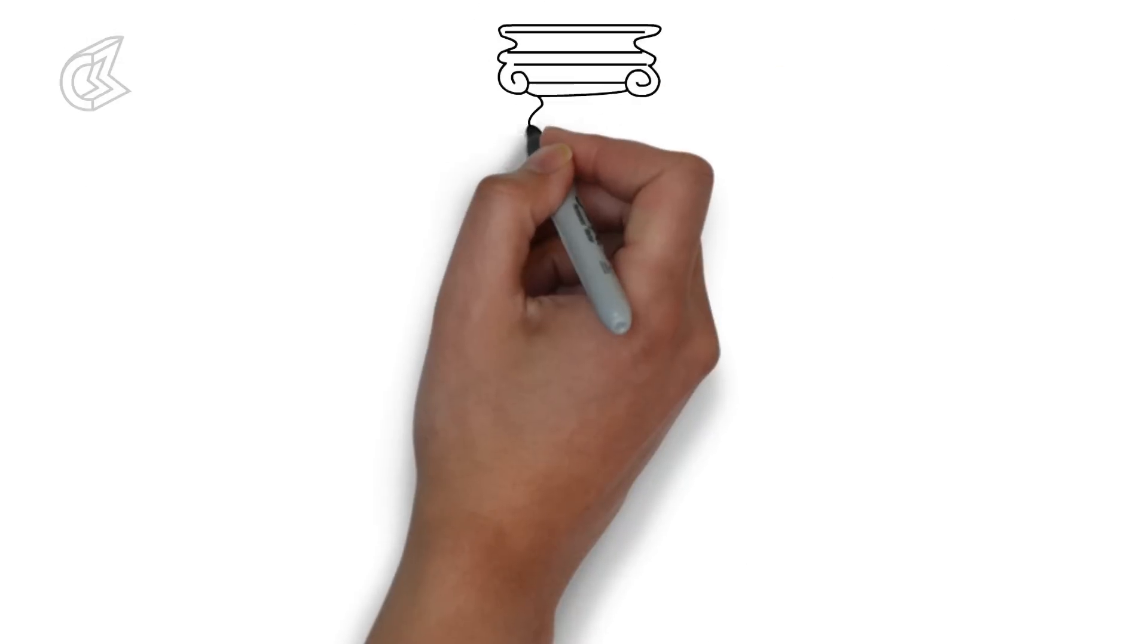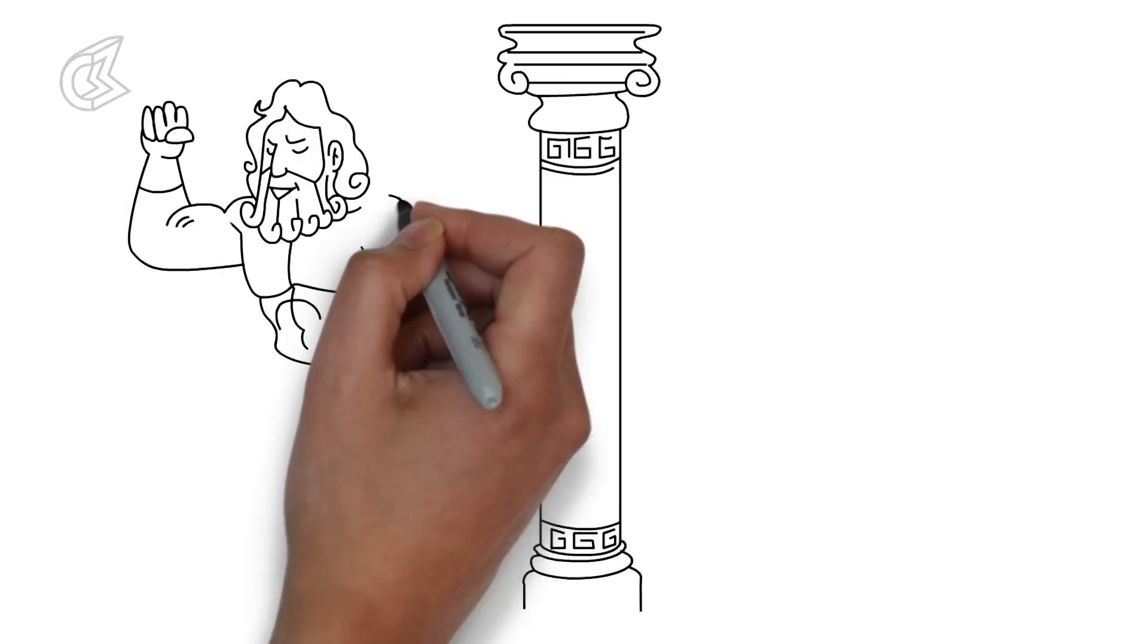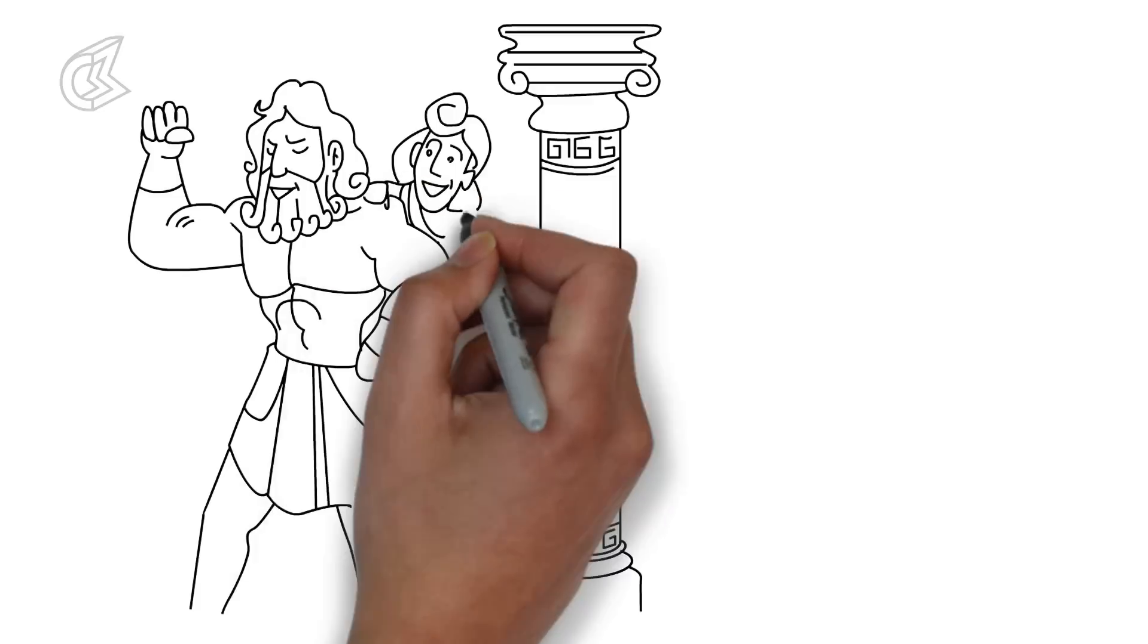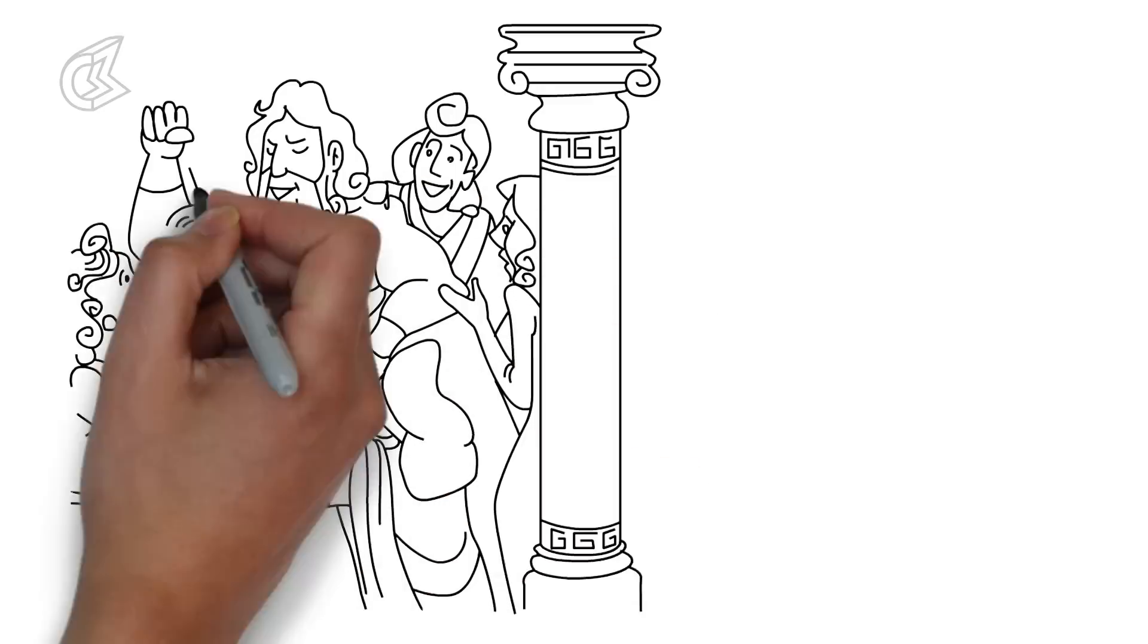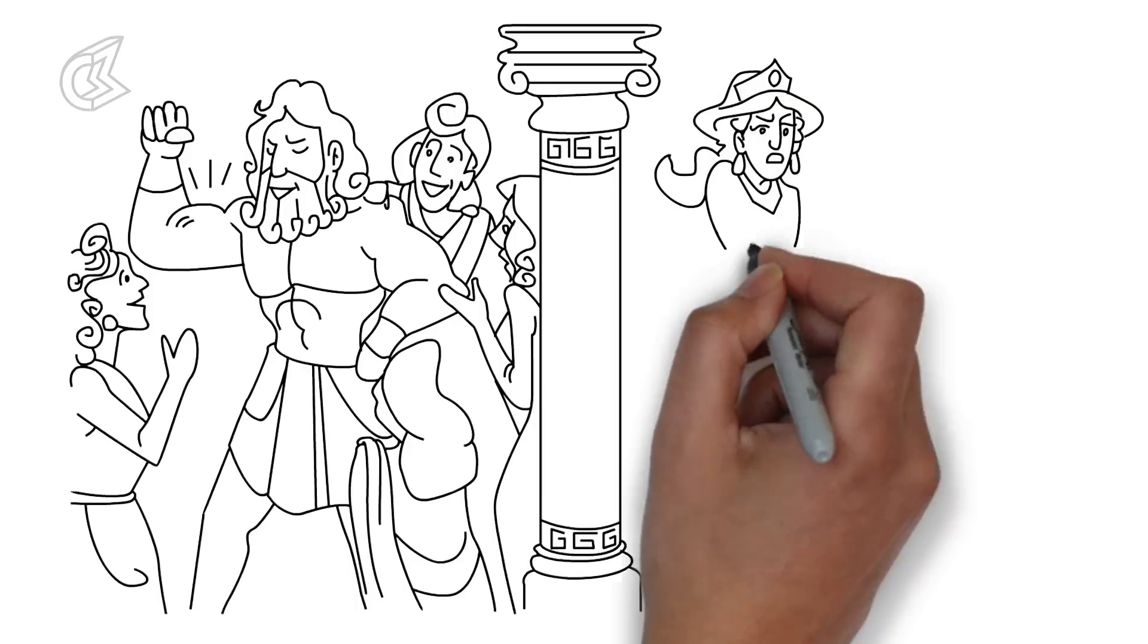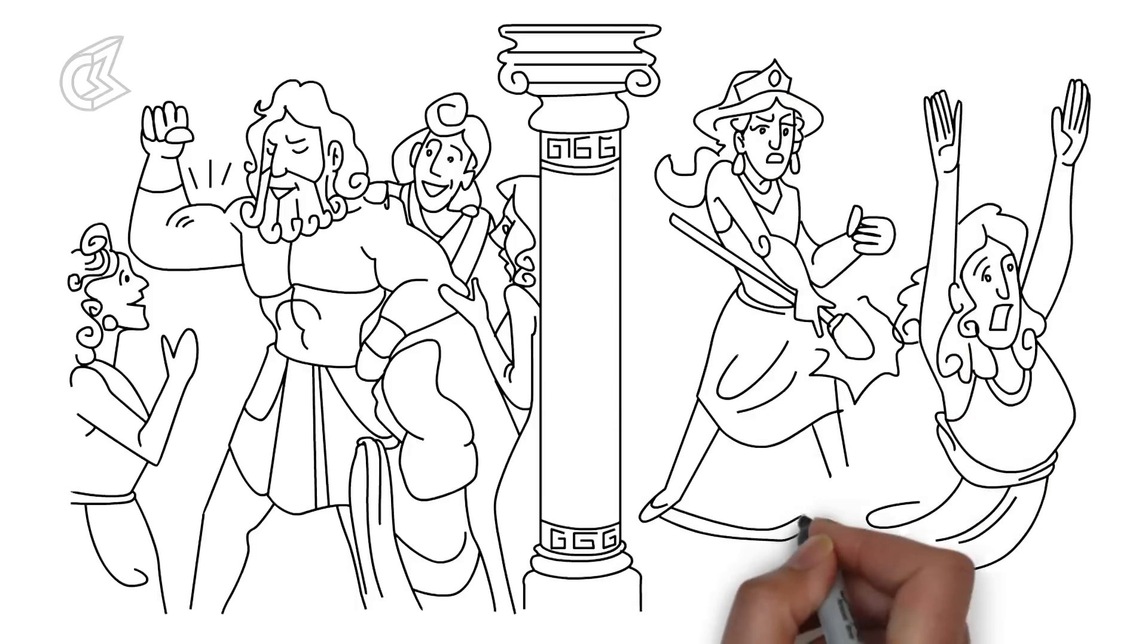One time, when Hera was distracted by a nymph called Echo, Zeus slipped out and went about seducing mortal women. When Hera found out about this, she concluded that Echo was deliberately distracting her and cursed her. Since then, Echo has only been able to repeat the words of others.